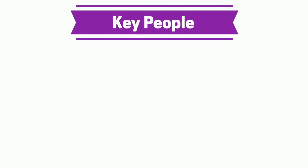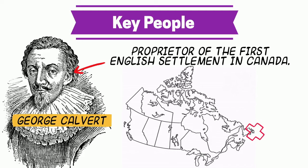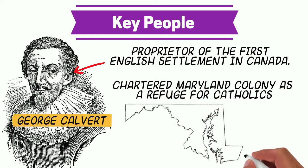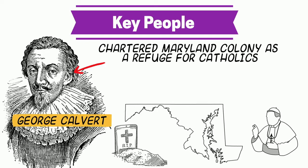As for key people in this region, George Calvert is one of the big ones. He established the first English settlement in Canada, experienced a brutal Canadian winter, and decided he had to get out of there. He went back to the UK and tried to charter a place with a better climate, which ended up being Maryland. He envisioned this new charter being a refuge for all Catholics from the UK. Sadly, George Calvert dies before the charter is signed, but his legacy lives on with the colony of Maryland.